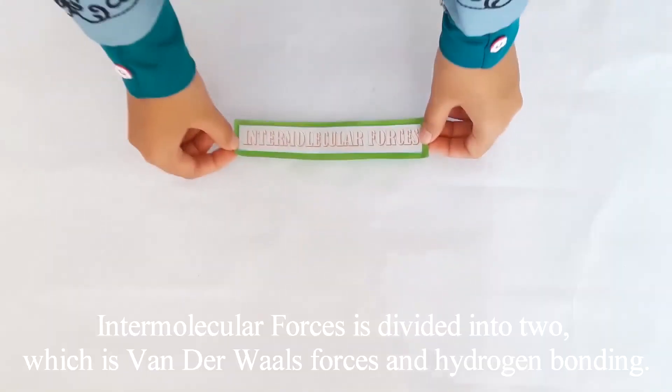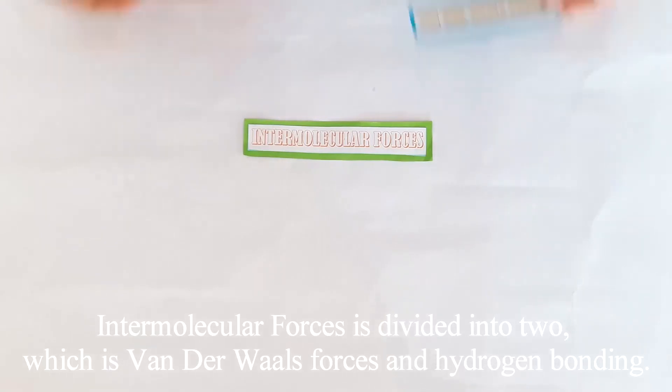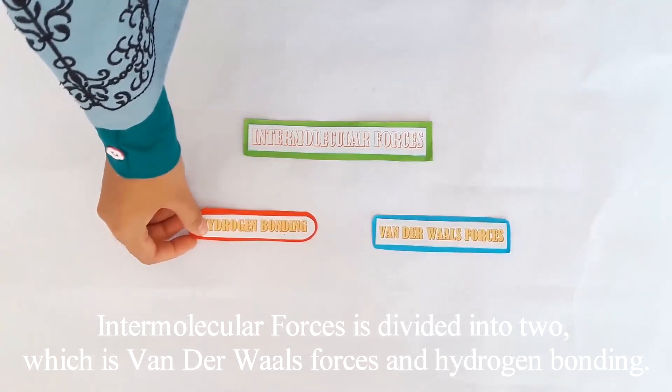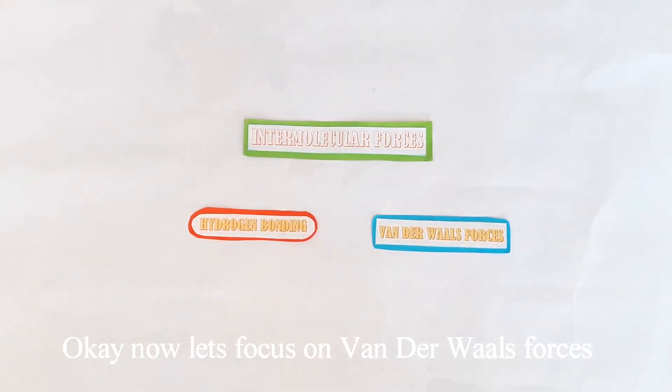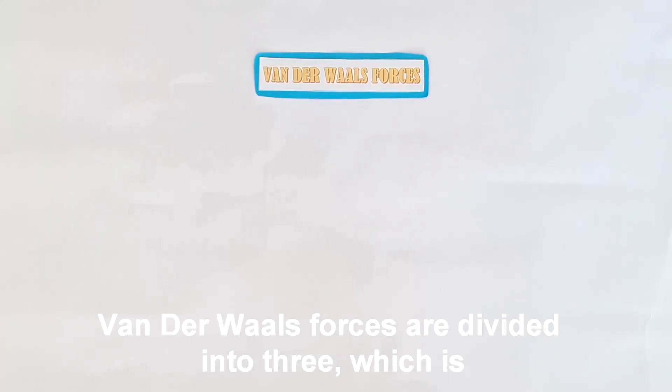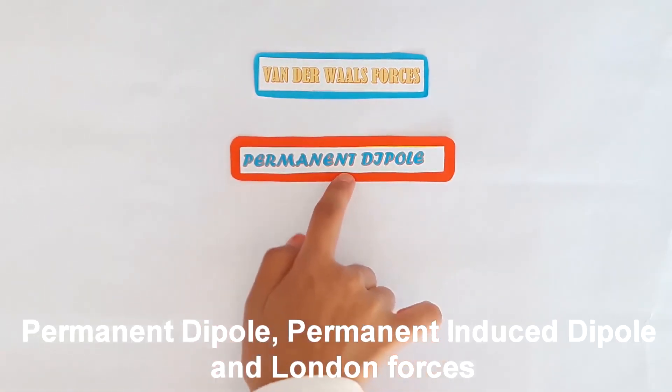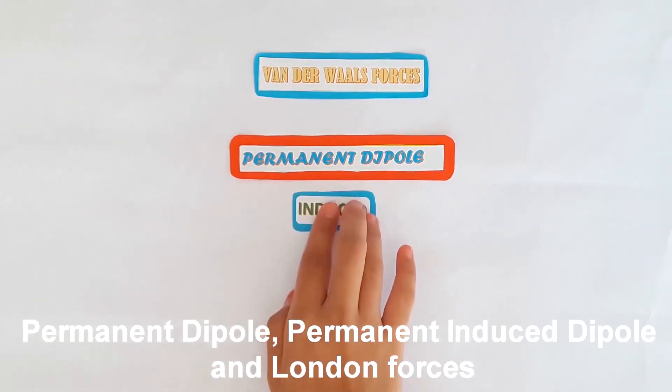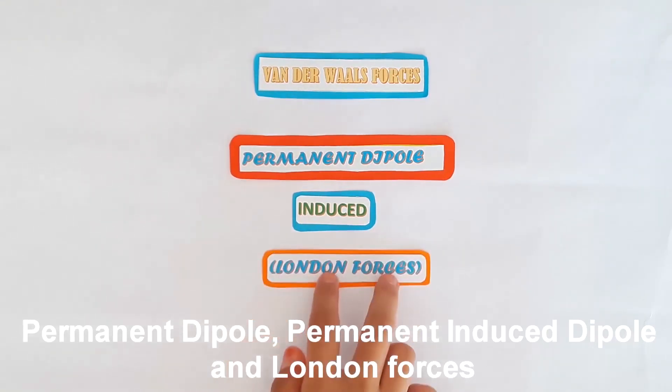Intermolecular forces are divided into two, which is Van der Waals forces and hydrogen bonding. Okay, now let's focus on Van der Waals forces. Van der Waals forces are divided into three, which is Permanent Dipole, Permanent Induced Dipole, and London forces.